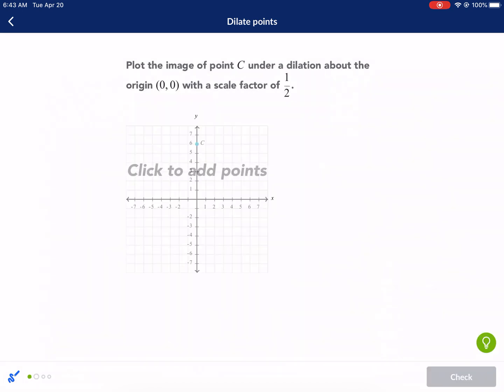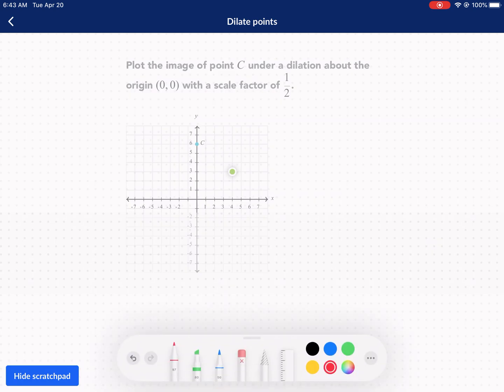Now, we're on the coordinate plane. Great. Plot the image of point C under a dilation about the origin, zero, zero, with a scale factor of one over two. This one's actually easier than the first one because we don't really have to worry about our x coordinate. It's on the y-axis, so it's just going to stay on the y-axis. Another way to do this problem, even easier, is to take your – so, this is the center. Okay? Zero, zero. That's where we're dilating it around.